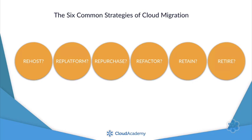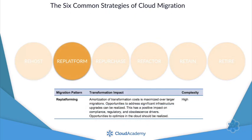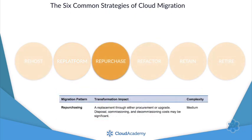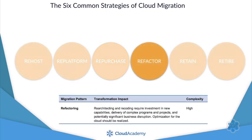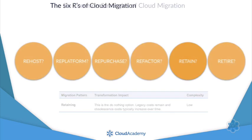They're commonly called the six R's, and they are re-host, re-platform, re-purchase, re-factor, retain, and retire.